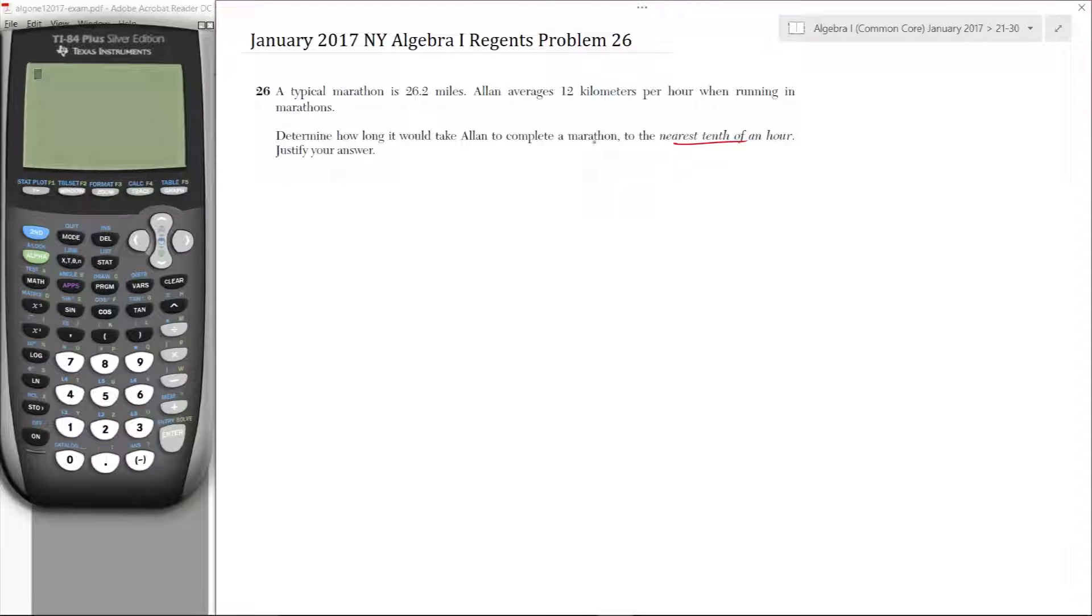Some hints: if you don't do the nearest tenth of an hour, you're going to get a point off. So just be careful. Also, a very common error is to do 26.2 divided by just 12, getting 2.1833 repeating, so round to the nearest tenth 2.2 and call it quits because we're done. Right? That's being careless. Of course they wouldn't give you a full algebra problem and expect you to do that and make it worth two points. Right? So not in a part two. The thing to notice: this is in miles and this is in kilometers per hour. So we do need to be able to convert from kilometers to miles or vice versa. And they give us the tools to do it and we're going to go over that.